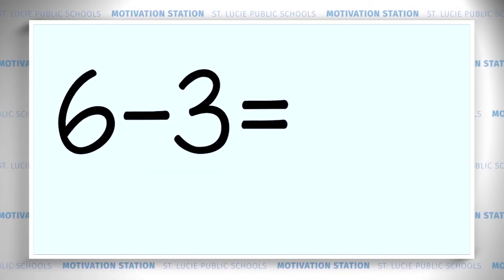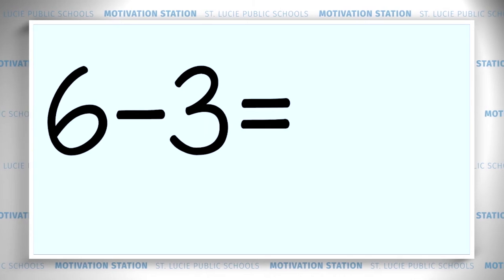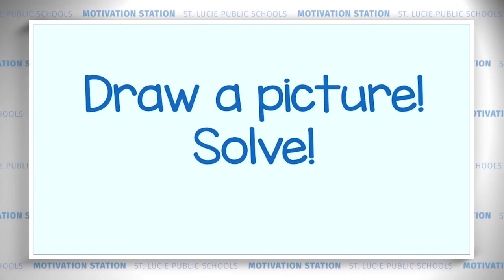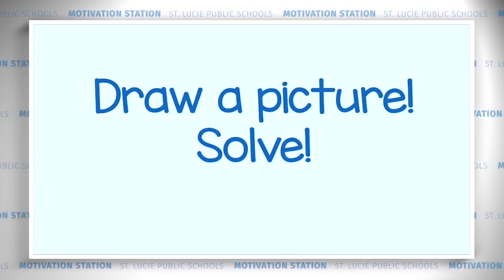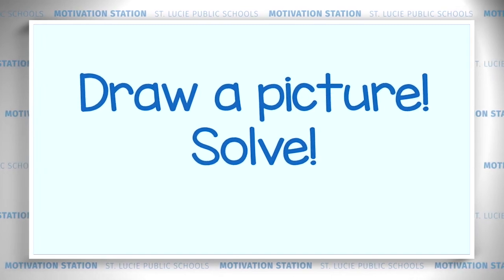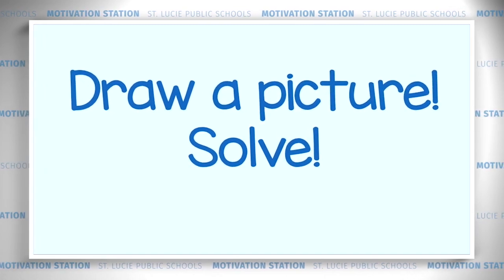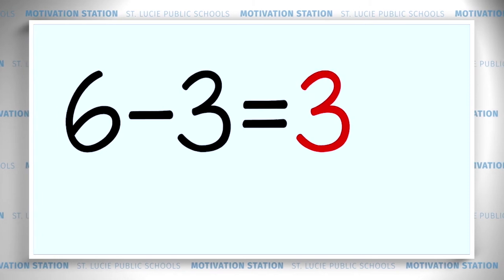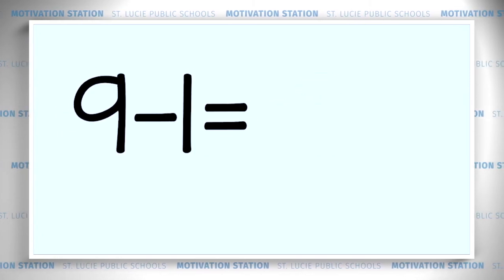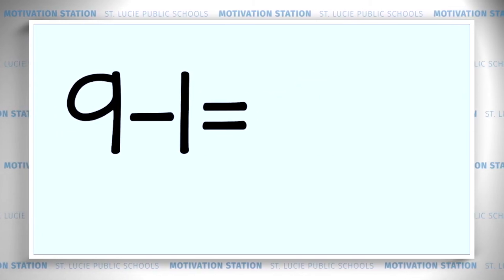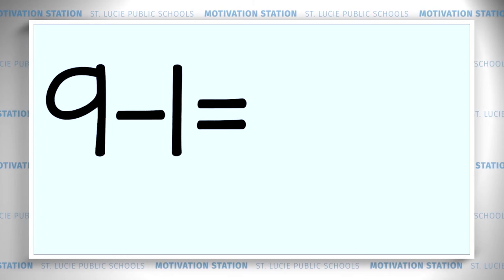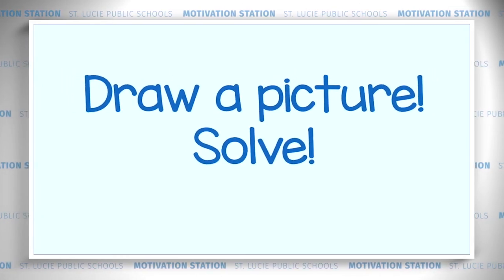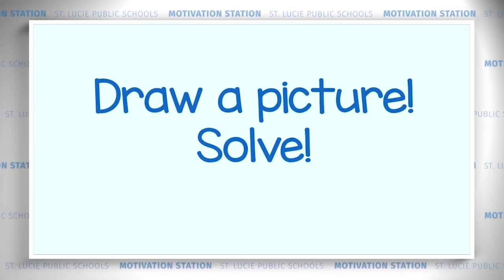Six minus three equals — all right, let's solve it. Draw a picture and write the equation. What's the answer? Three. Six minus three equals three. Now, nine minus one equals — draw a picture, write the equation, and let's solve. The answer is eight. Great job, you did it!